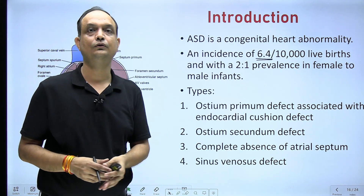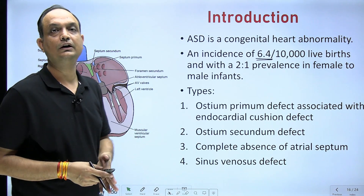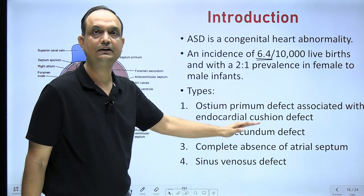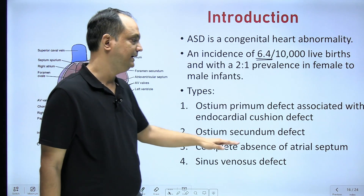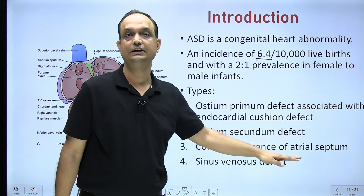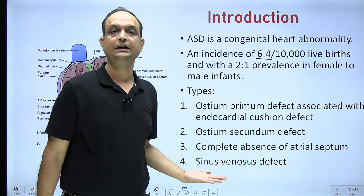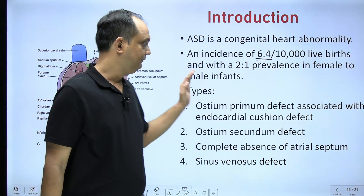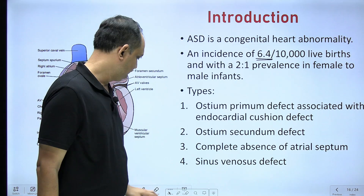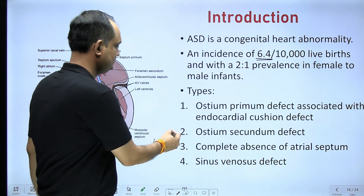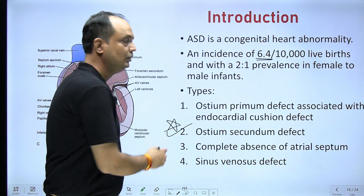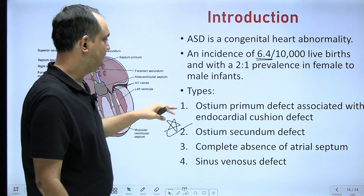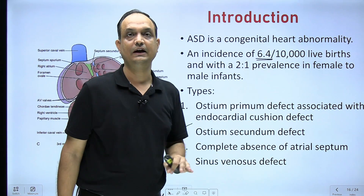Atrial septal defects are of four types: one is the ostium primum defect, then you will have ostium secundum defect, then you will have the complete absence of the atrial septum, and fourth is the atrial septal defects related with the sinus venosus defect. Among all four types, ostium secundum defects are the most commonly seen.